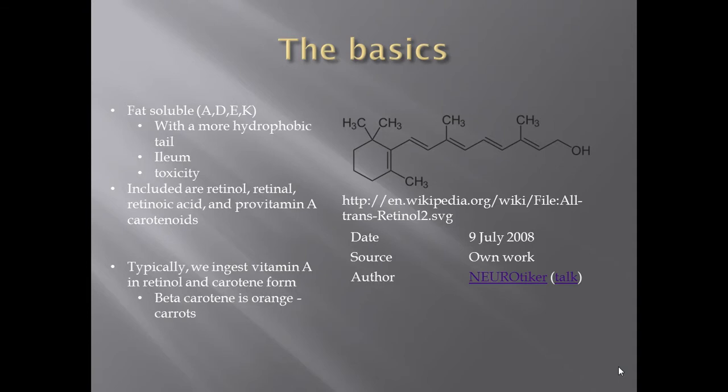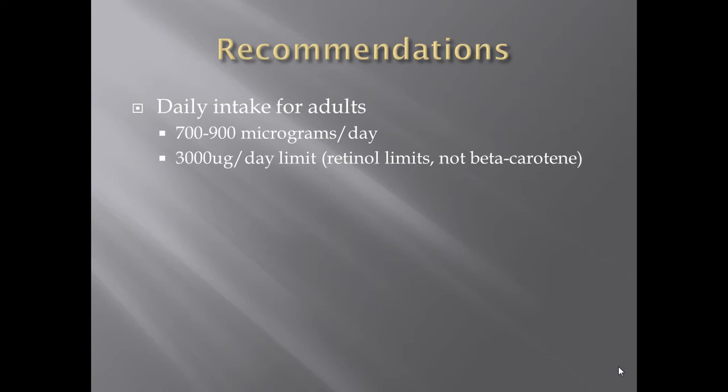The forms of vitamin A include retinol, retinoic acid, and pro-vitamin A carotenoids. We get vitamin A in the form of retinol and carotene — you may already know that carrots are a good source, especially as beta-carotene. There is a daily upper limit, and that limit is in the retinol form. Beta-carotene — you can eat almost unlimited carrots — your body will excrete the excess. In the retinol form, not so much.